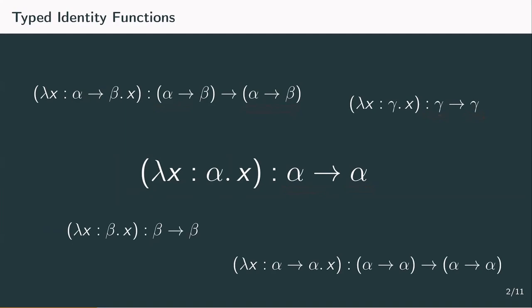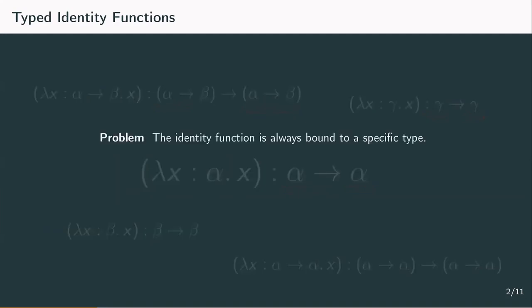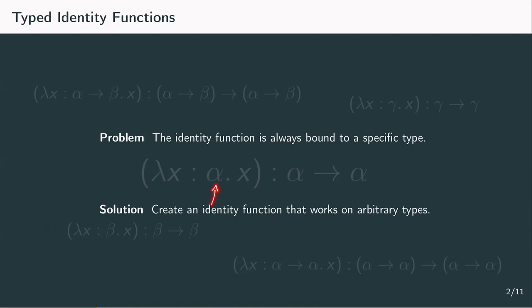But here's the problem. With only simple types, each identity function is bound to its specific input type, so we would have to create a new identity function for every new type to cover this. We could however use polymorphism to formalize that terms can inherit many types at once, and so we're going to construct one identity function that deals with all possible input types at once.